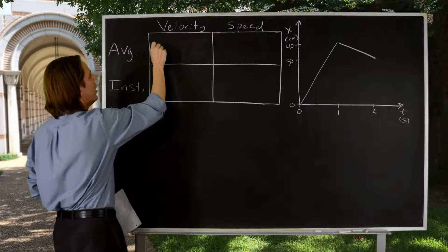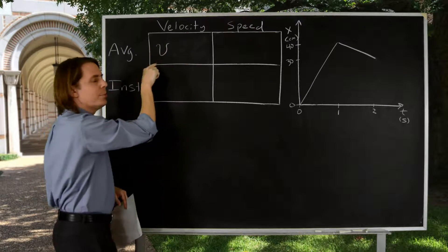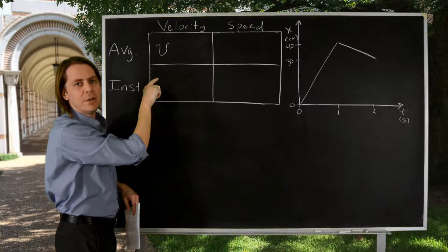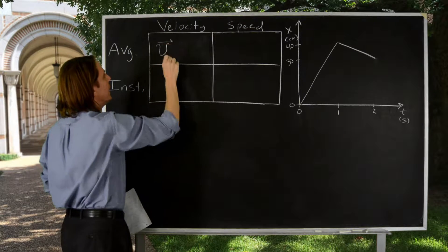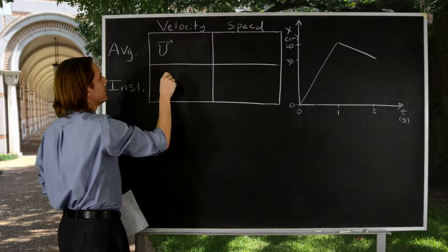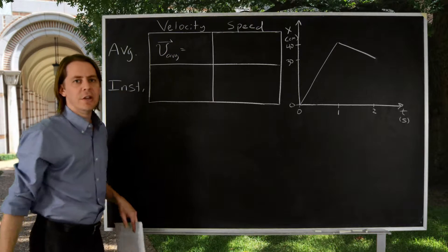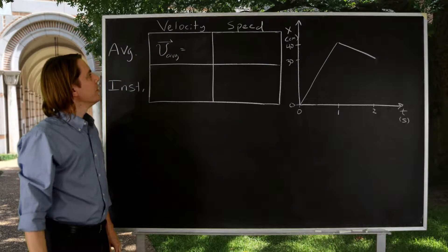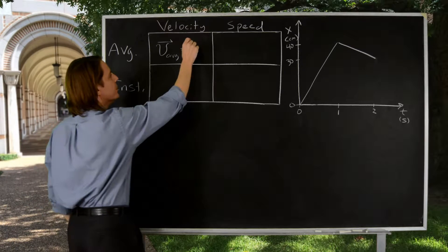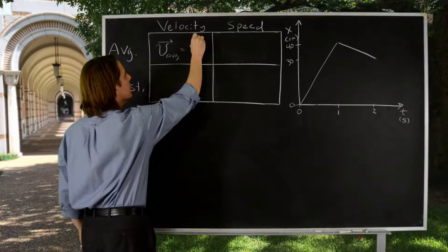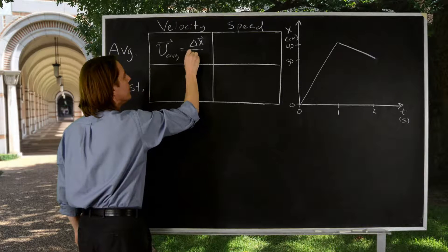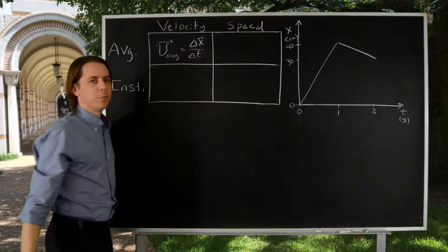First, we have the average velocity. So we use a cursive V, and velocities are always vectors, so we'll put a vector on it, and for average, we'll put AVG for the subscript. So the average velocity is defined as the displacement over the time interval for that displacement.